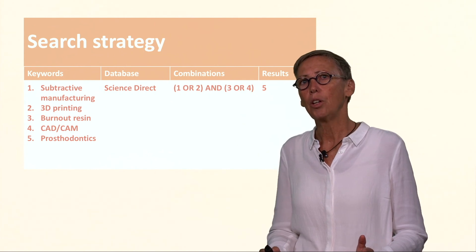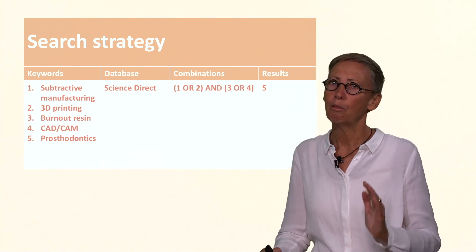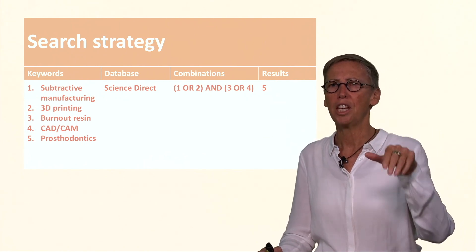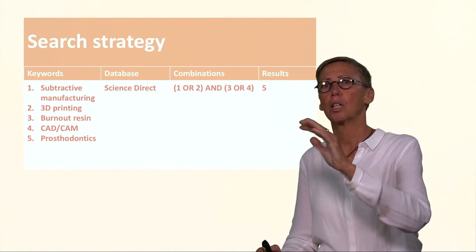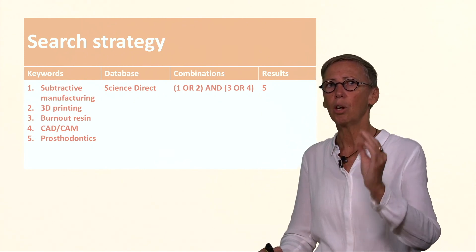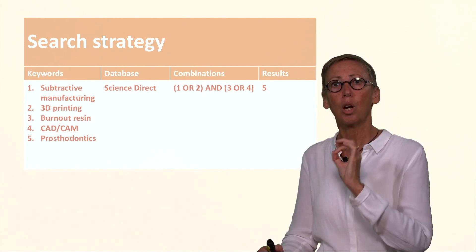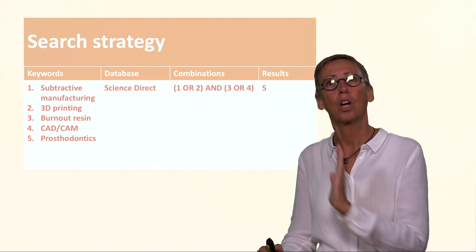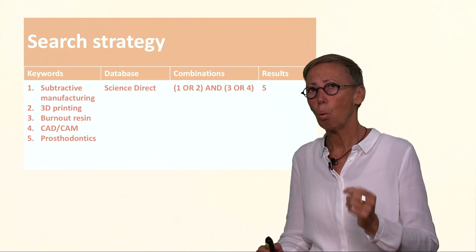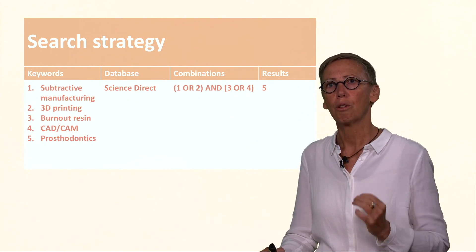In a systematic review you'll have a very structured search strategy. In a traditional literature review it'll be a bit looser — it might record the year, the author, what type of study it was (qualitative or quantitative), and how it's significant to your study. In a systematic review you'll have strictly defined keywords, the database used, what combinations of those keywords were used, and then the number of articles found and what was said in them. It's a more structured approach for a systematic review.